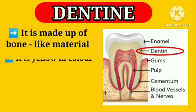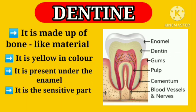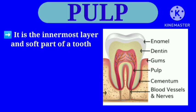Dentine is made up of bone-like material. It is yellow in color. It is present under the enamel and it is the sensitive part of the tooth.